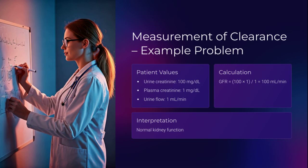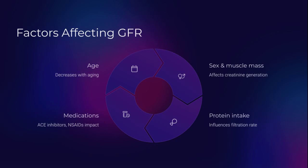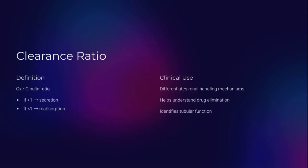But remember, numbers lie without context. Age decreases GFR. Sex and muscle mass alter creatinine production. Protein intake changes glomerular dynamics. Medications like NSAIDs or ACE inhibitors can push the filtration curve up or down. The clearance ratio — CX over C-inulin — helps decode tubular behavior: greater than 1 suggests secretion, less than 1 suggests reabsorption. It's a diagnostic magnifying glass — simple math, powerful insight.